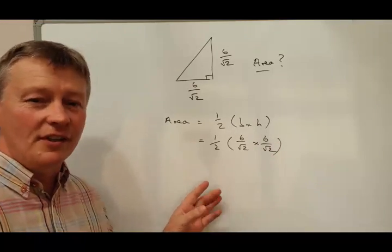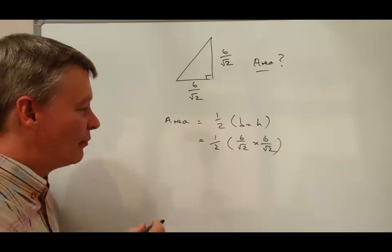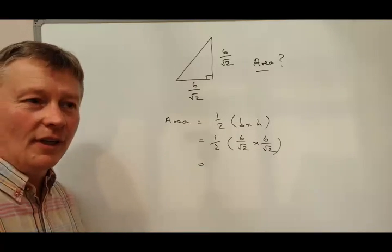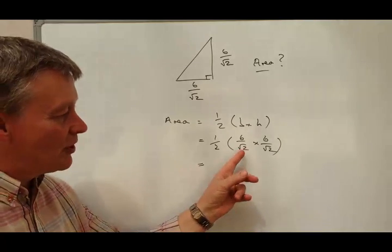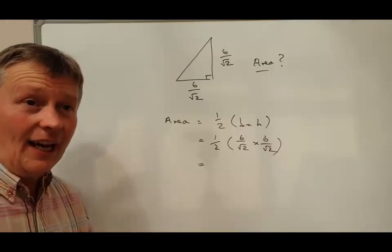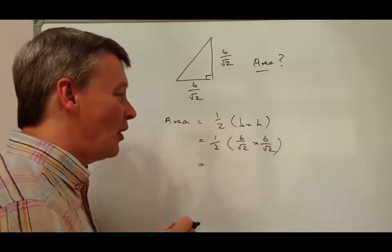Okay, now you can hopefully see where this is going, because they've made it relatively straightforward for you. A root number multiplied by a root number is the same whole number. Root 2 times root 2 is root 4, and the square root of 4 is 2.